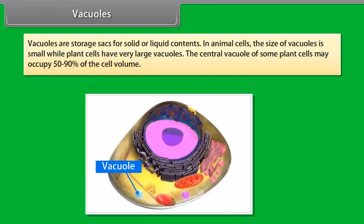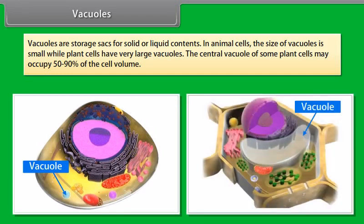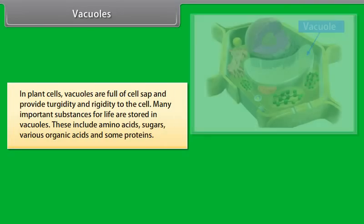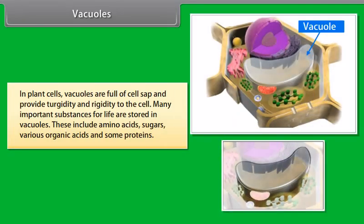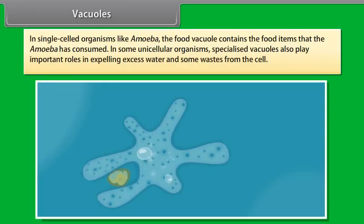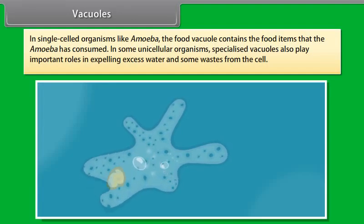Plastids are present only in plant cells, not in animal cells. Plastids are similar to mitochondria in external structure. There are two types of plastids: chromoplasts, which are colored plastids, and leucoplasts, which are white or colorless plastids. Chromoplasts provide different colors to flowers and fruits. Leucoplasts are colorless plastids that store materials like starch, oils, and protein granules. Chlorophyll-containing plastids are known as chloroplasts, and these are important for photosynthesis in plants.